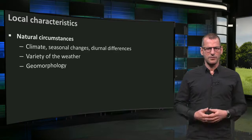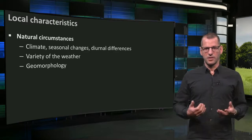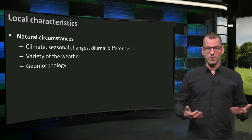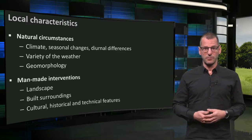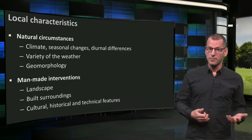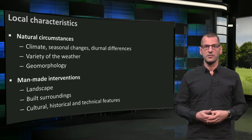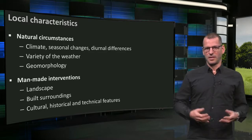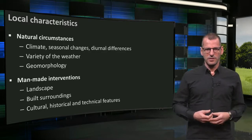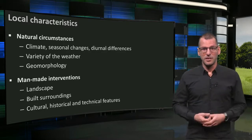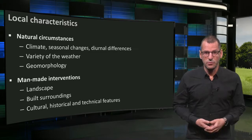They can be related to natural circumstances: the climate, weather, and geomorphology. But they can also refer to man-made interventions, such as the landscape, built surroundings, and features of various kinds. Let's look at these man-made interventions first and see if they are planned in a sustainable way.